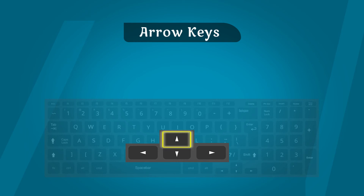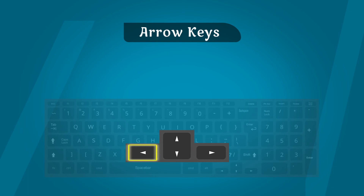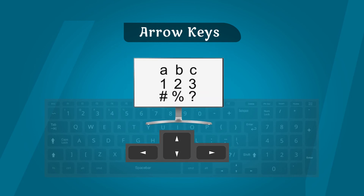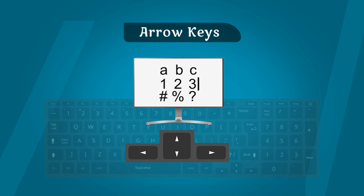Arrow keys: Arrow keys arrow sign से mark होती है। Keyboard पर चार arrow keys होती है, जो cursor को चारों direction में move करने में मदद करती है — ऊपर, नीचे, left और right।